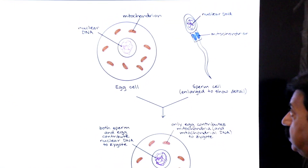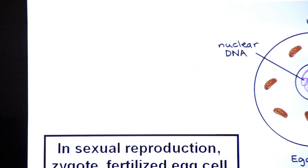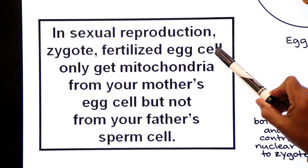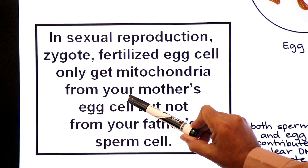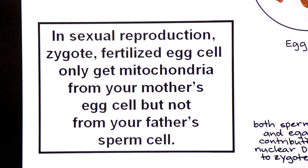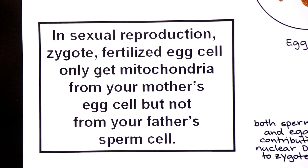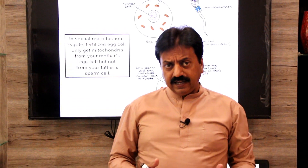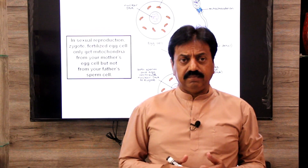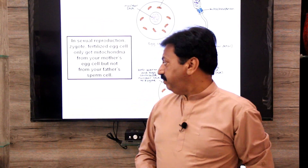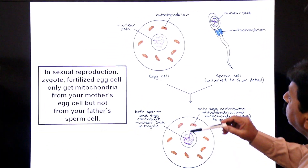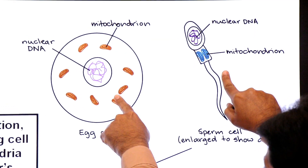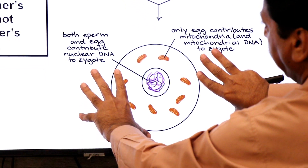In sexual reproduction, the zygote — the fertilized egg cell — only gets mitochondria from the mother's egg cell, but not from the father's sperm cell. During fertilization, nuclear DNA comes from both parents — from the father as well as from the mother. The fusion of sperm and egg is known as fertilization, and the result is a diploid zygote.